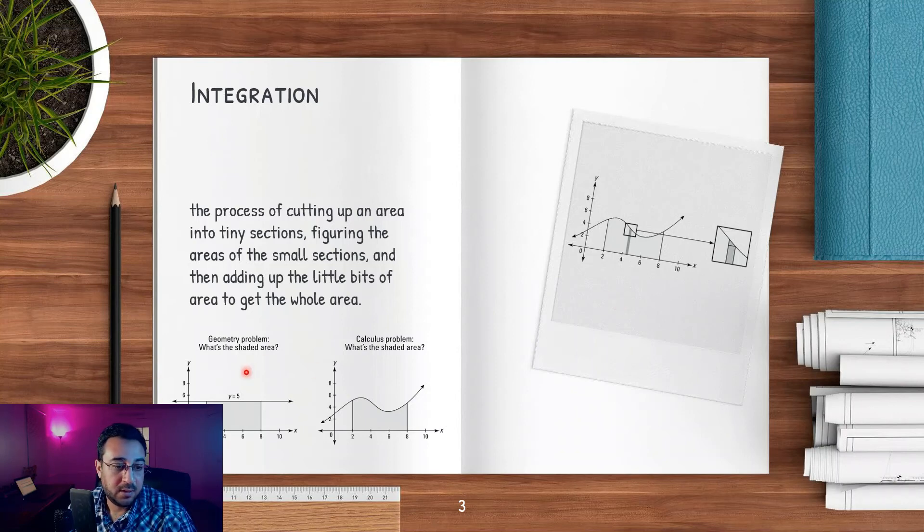On the left you have the geometry problem - what's the shaded area? It's a rectangle, so you know the width, which is 5 in this case, and the length, which is 8 minus 2, equals 6. So width by length gives you the area of that shaded area in square meters or square inches.